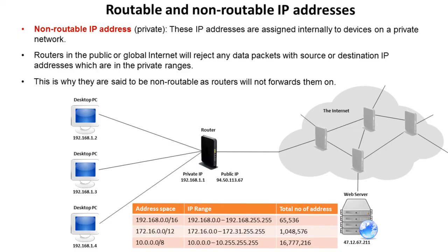If we have a router which connects your internal local network to the external internet, then it itself has to have two IP addresses. It has a private one which is referenced inside your network, and it has a public one which the rest of the internet can see.